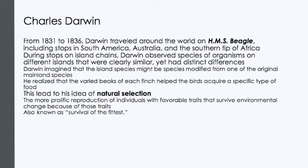Darwin's book presented two main concepts. First, he argued convincingly from several lines of evidence that contemporary species arose from a succession of ancestors through a process of, quote, descent with modification — his phrase for evolution. Darwin's second concept in The Origin of Species was a mechanism for how life evolves, and that is natural selection. Natural selection is a process in which organisms with certain inherited traits are more likely to survive and reproduce than are individuals with other traits. As a result of natural selection, a population — a group of individuals of the same species living in the same place at the same time — can change over generations.